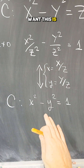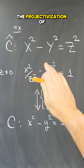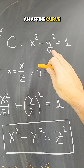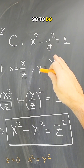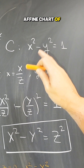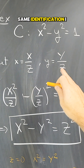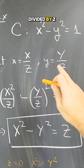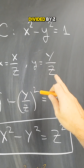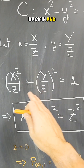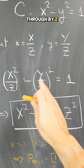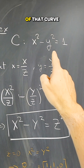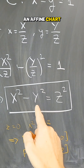Or if you want, this is an affine curve and this is the projectivization of that affine curve. Now let's go backwards: start with an affine curve and find the projectivization. I imagine this is an affine chart of a projective curve, and using the same identification, little x would be the projective X divided by z, and little y would be the projective Y divided by z. Plugging those back in and multiplying through by z squared gives this equation, which is the projectivization of that curve.